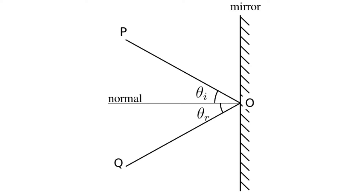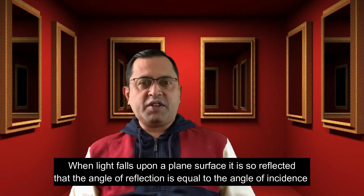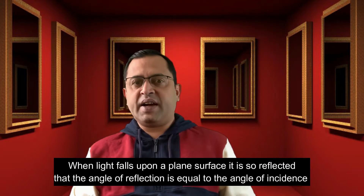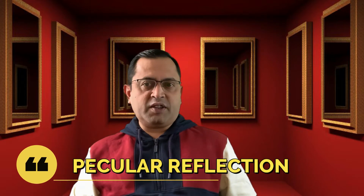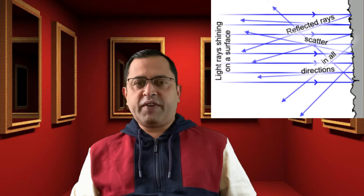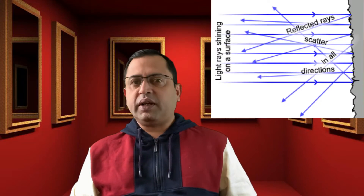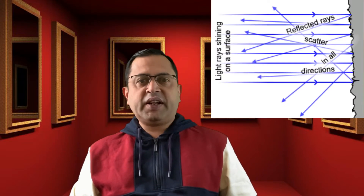The incoming light ray is called the incident ray, depicted as Q, and the outgoing ray is called the reflected ray, mentioned as P. The normal is an imaginary line perpendicular to the mirror. The law of reflection says that the incident angle and the reflected angle are equal. So when we point a laser to the surface of a mirror, we can tell where the laser will be reflected to. This kind of reflection is also known as specular reflection. There is also diffuse reflection, which occurs when the surface is not smooth.